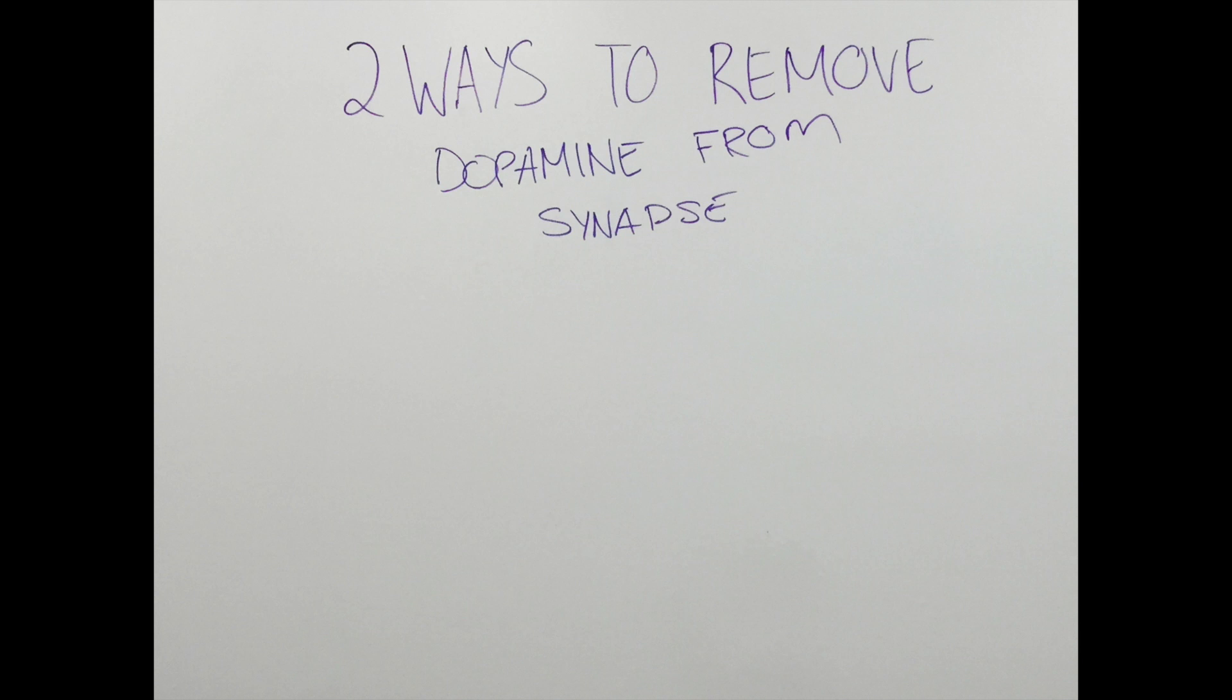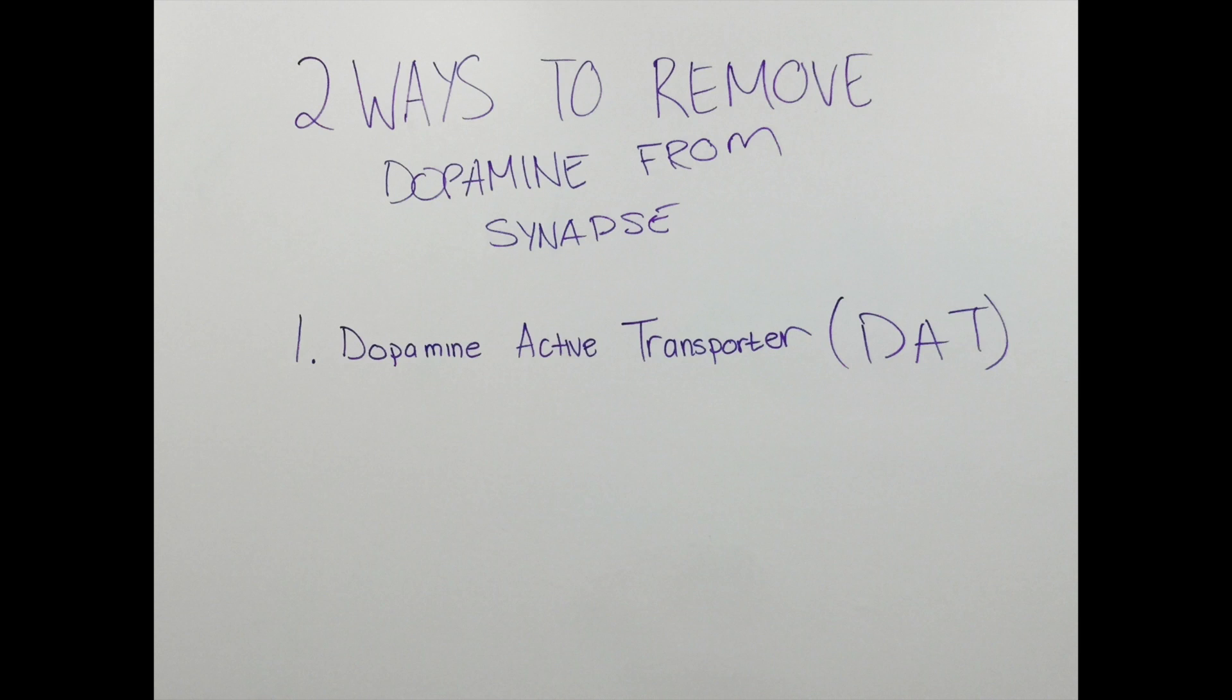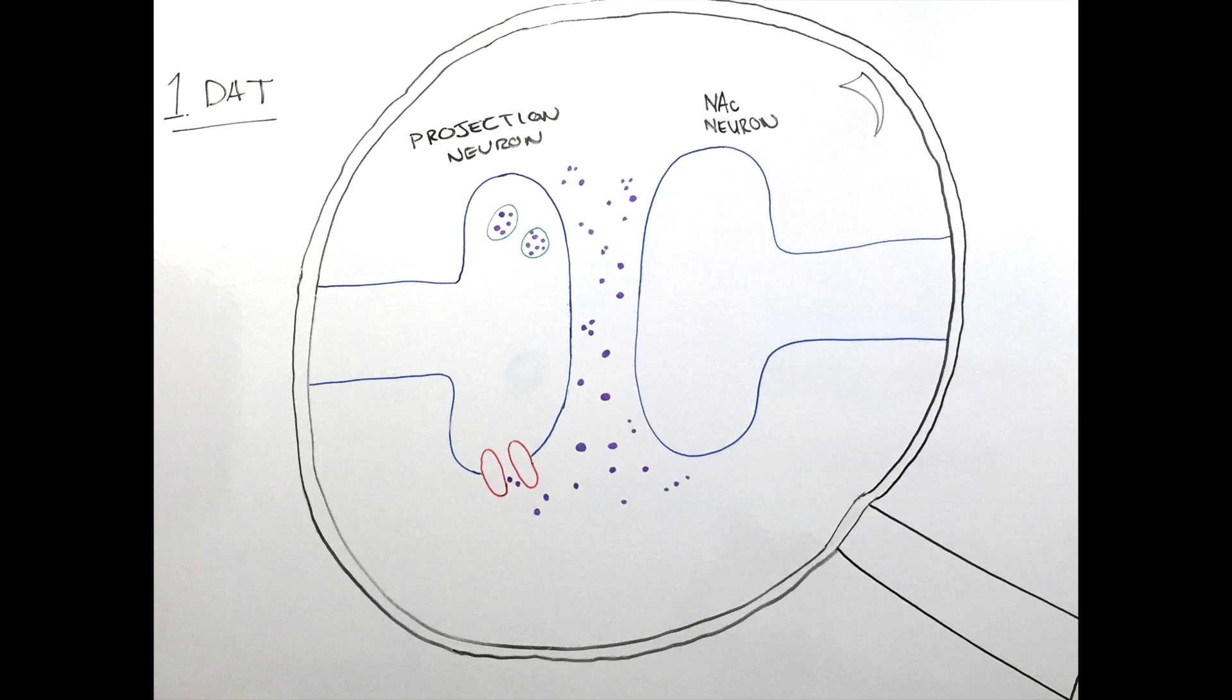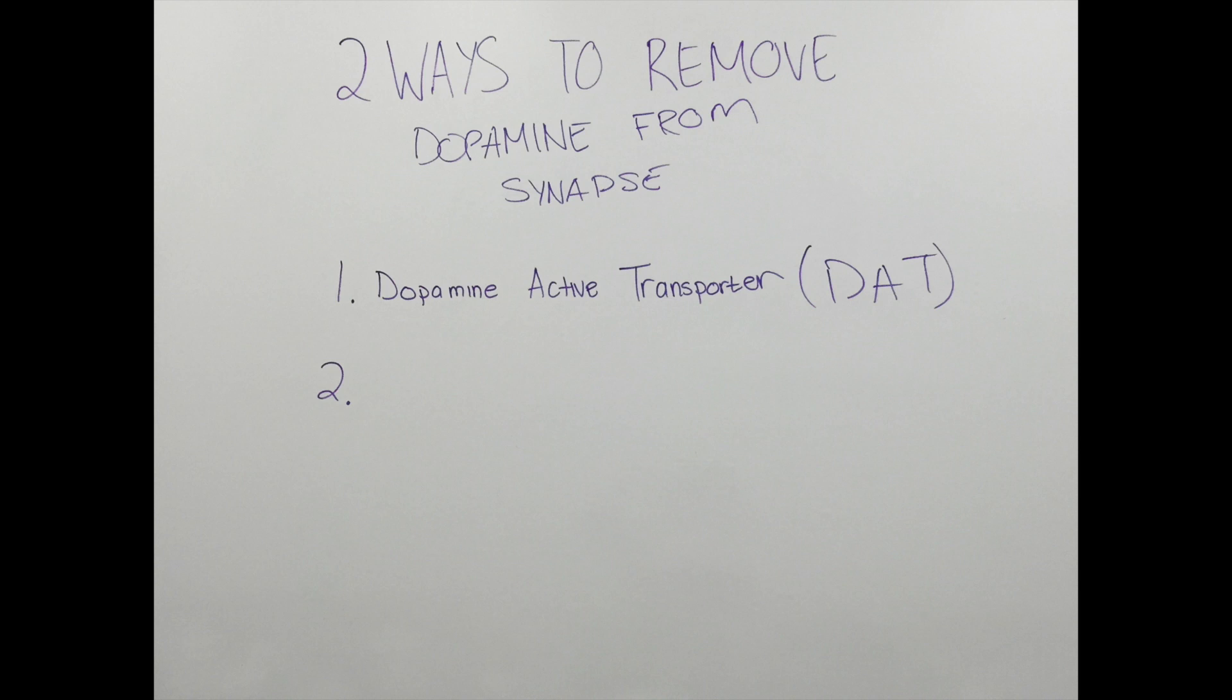There are two ways to do this. The first way dopamine is removed from the space is through the dopamine active transporter, called the DAT. This transporter, found on the membrane of the neuron, can bring dopamine back into the end of the neuron that it was released from.